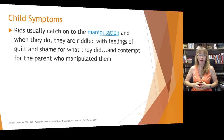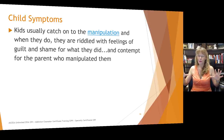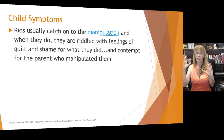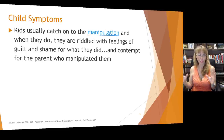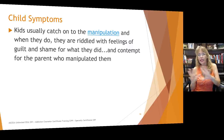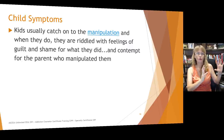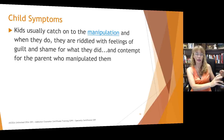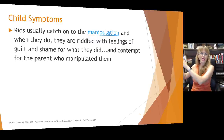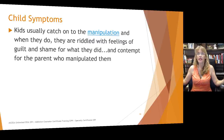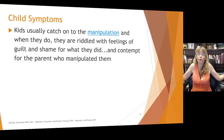They may develop contempt for the parent who manipulated them. Some children end up in a gray place where they still have those implanted memories or borrowed scenarios from the alienating parent and have difficulty trusting the targeted parent, but they also recognize that the alienating parent is harmful and destructive. So they feel completely alone and isolated — 'I don't know who to trust.'